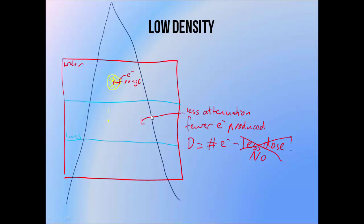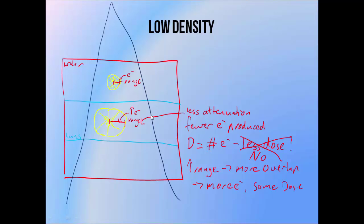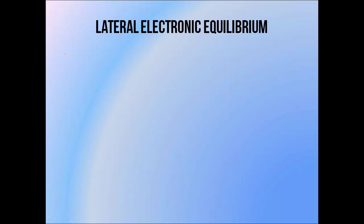In lung, yes there are fewer electrons being produced, but because the electron range is longer, more electrons can reach this point from further away, so the effect of decreased electron production on the dose is cancelled out by the increase in electron range. That explains why we sometimes don't see any drop in dose inside lung.